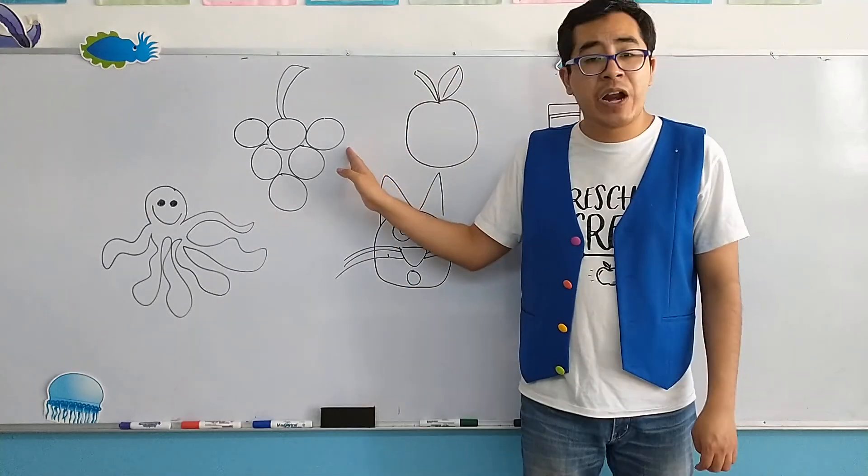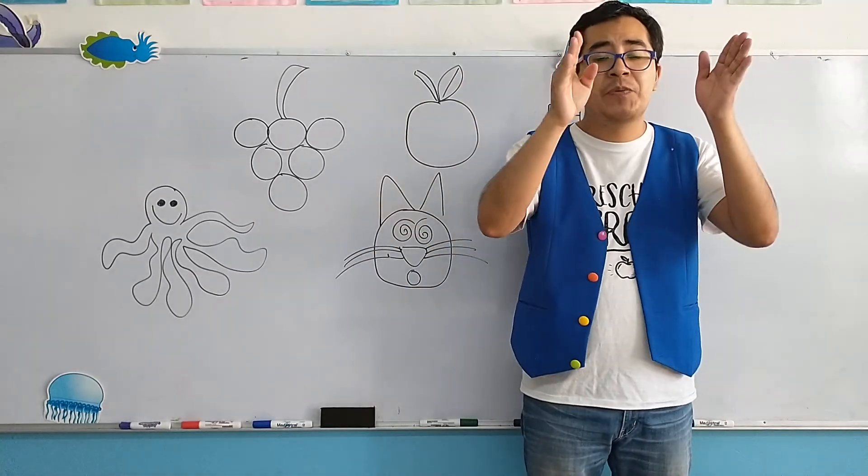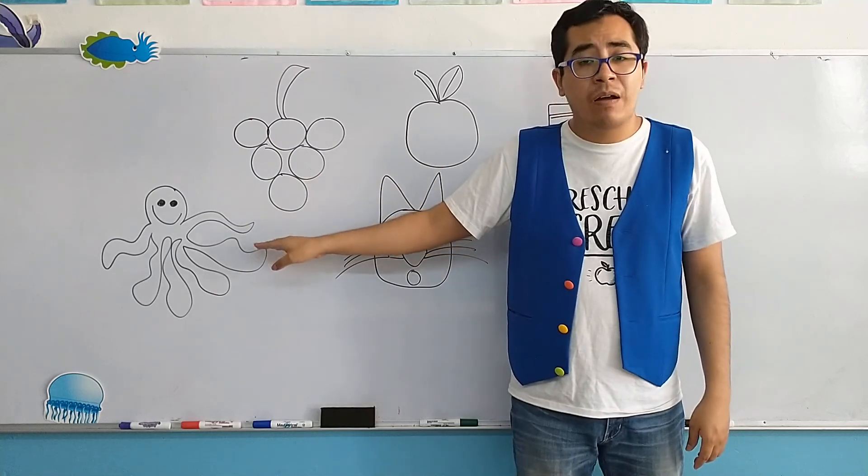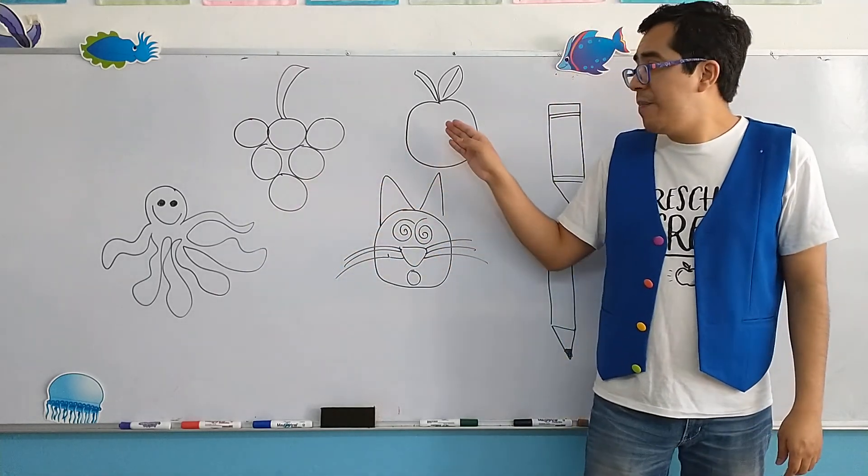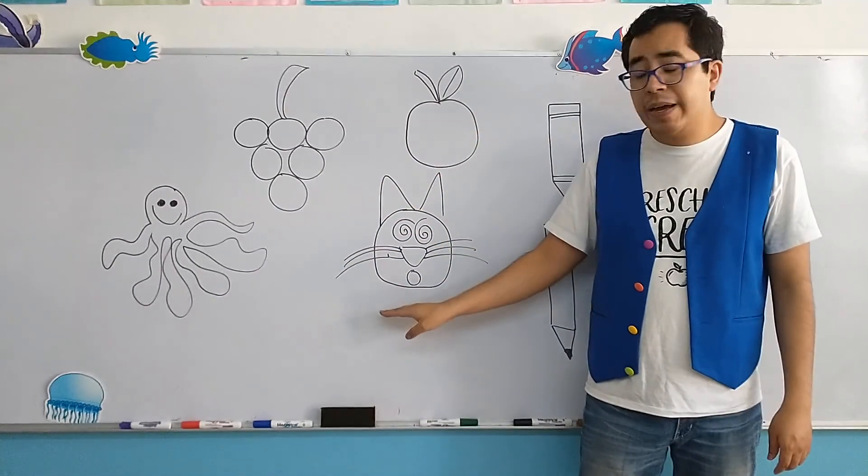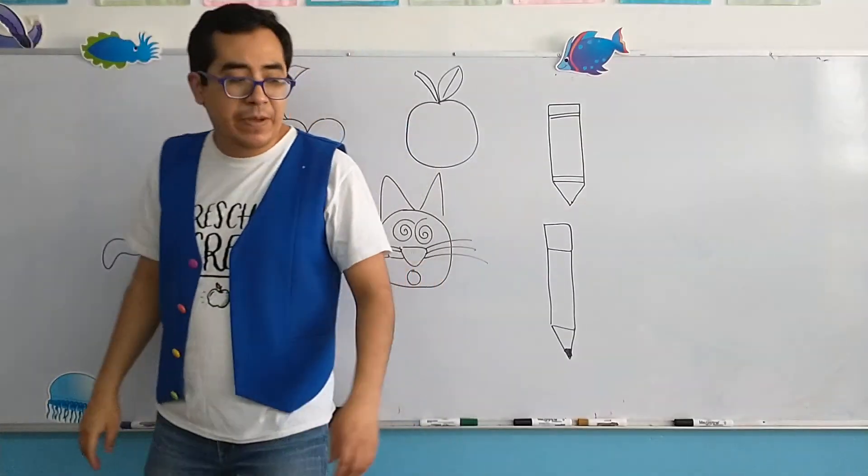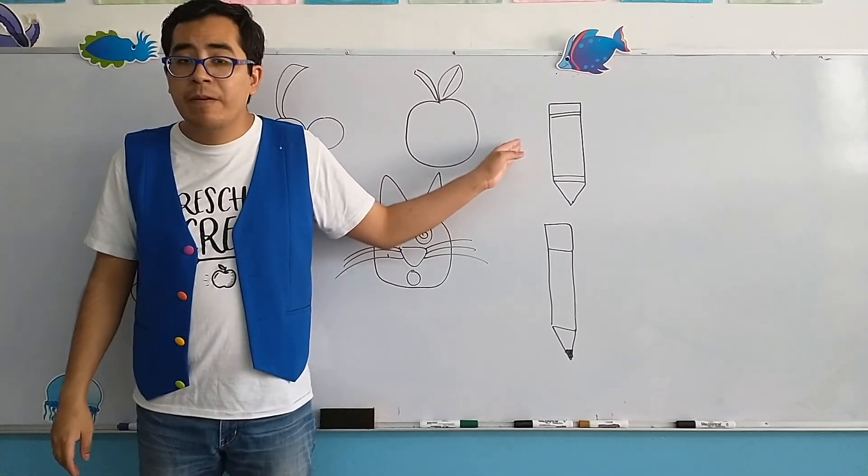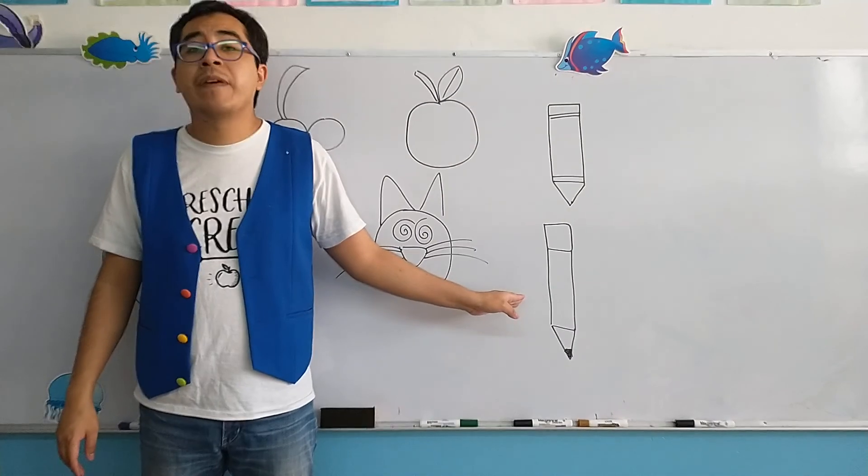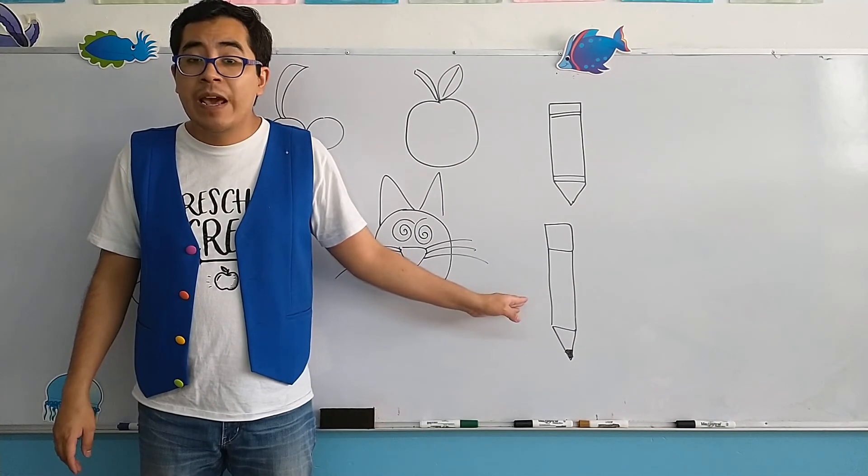I have grapes, uvas, I have once again an octopus, I have an apple, I have a cat, I have a crayon. And finally, I have a pencil.